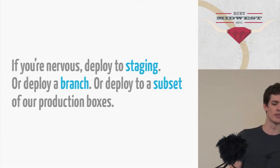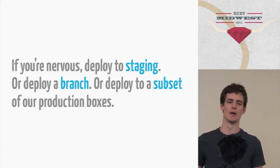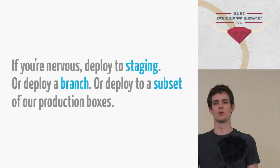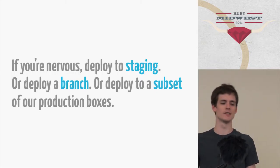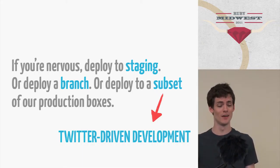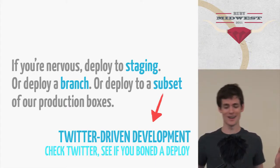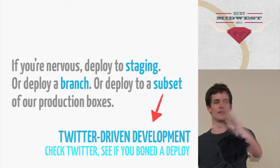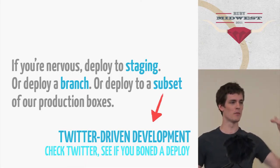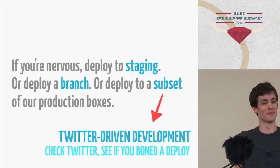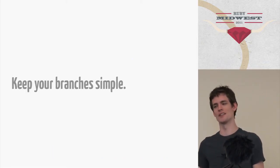The reason we do this is we deploy 10 to 40 times a day. We like very short changes, and if something breaks, you know exactly what breaks really quickly. If you're nervous, you can deploy to staging — we have a separate staging environment. You can also deploy separate branches and test that out, then deploy to master afterwards. You can also deploy to a subset — just deploy to two boxes and see if anything blows up; if it doesn't, merge into master and deploy from there. This is also sort of Twitter-driven development, because people will tweet constantly if something breaks.